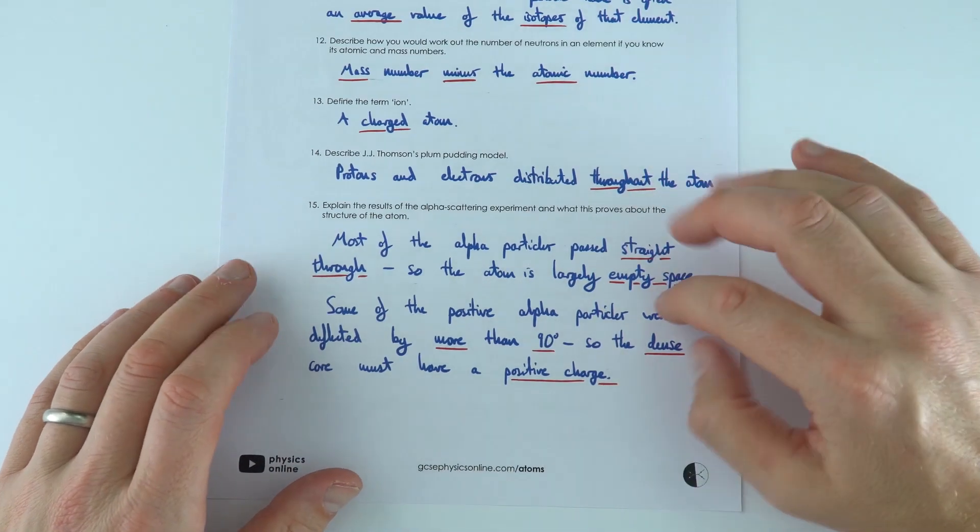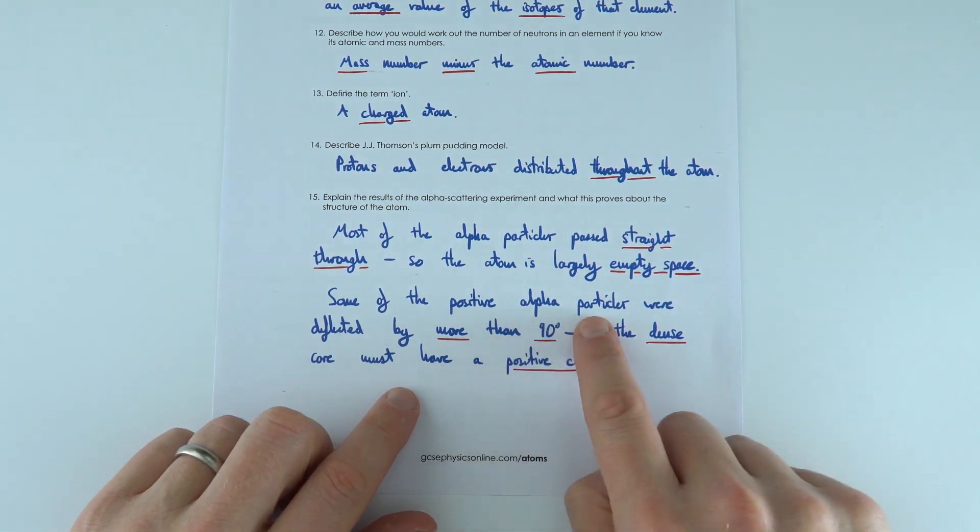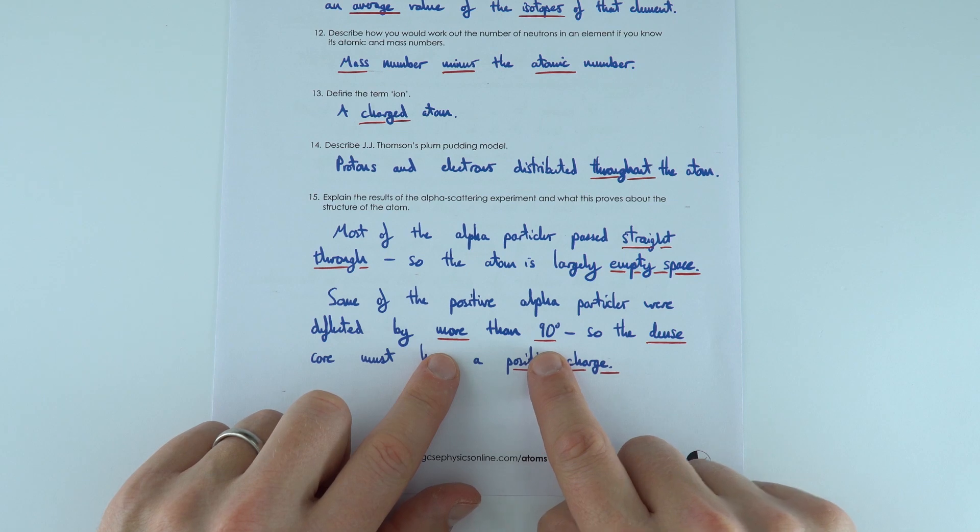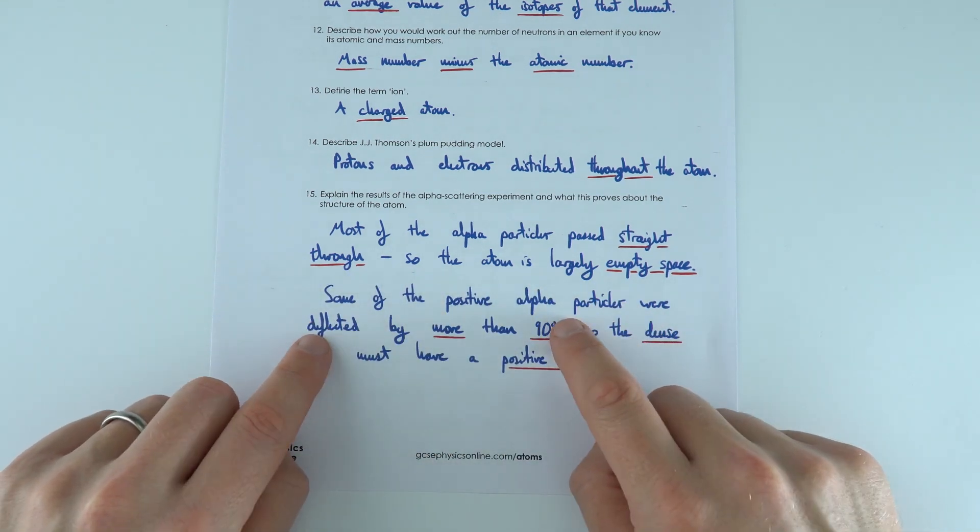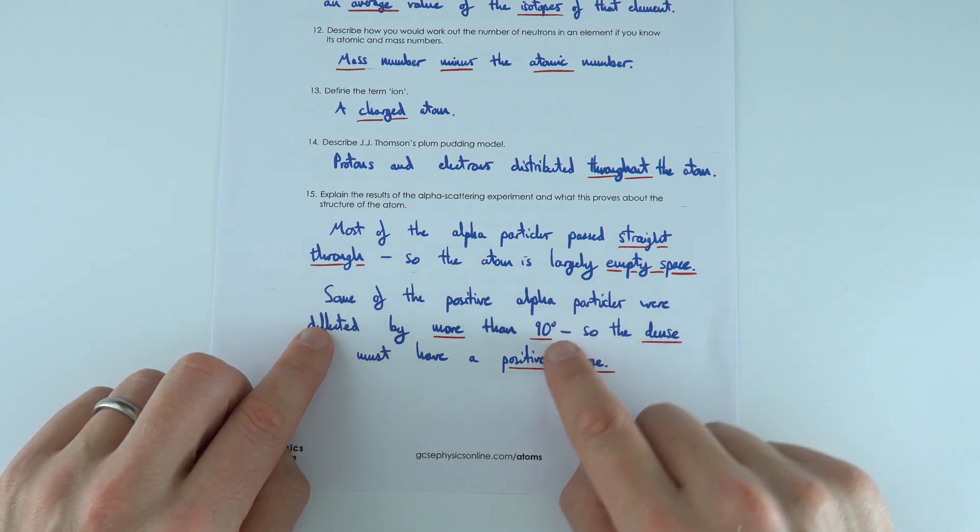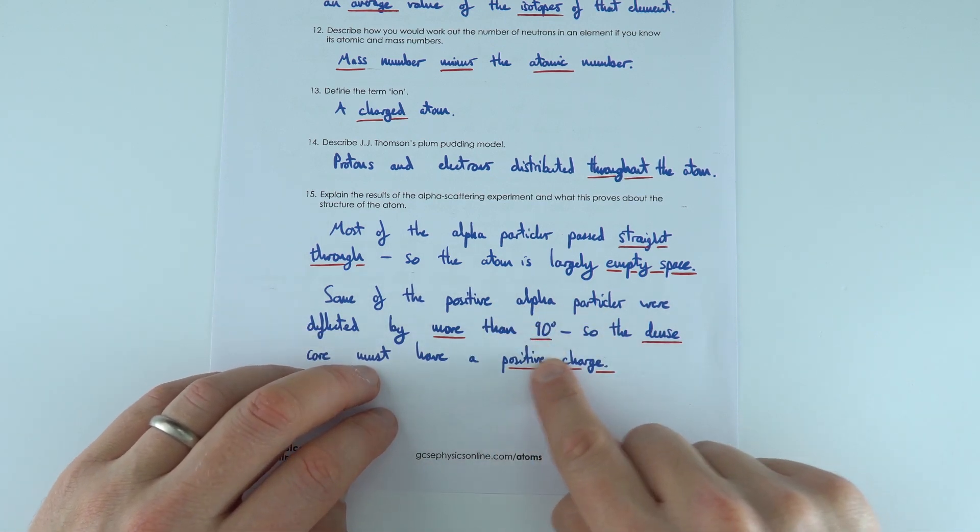If it's mainly empty space, then all the mass must be concentrated somewhere. Because some of these positive alpha particles were deflected by more than 90 degrees, they actually bounced back because they were repelled by the same charge. So the positive alpha could only have been repelled by a positive central core to the atom, which is the nucleus.